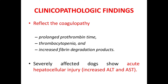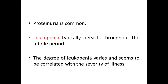Now let's see the clinical pathologic findings. These reflect the coagulopathy, which causes prolonged prothrombin time, thrombocytopenia, and increased fibrin degradation products. Severely affected dogs show acute hepatocellular injury, with increased ALT and AST. Proteinuria is common. Leukopenia typically persists throughout the febrile period, and the degree of leukopenia is correlated with the severity of illness.